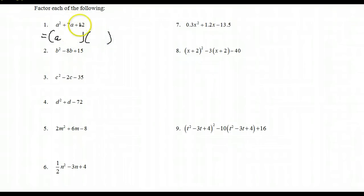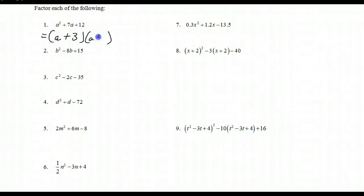Since the product is positive, both factors must be the same sign — both positive or both negative. The plus sign tells us they are both positive. Always do a quick mental FOIL to check: a squared plus 4a plus 3a gives plus 7a plus 12.